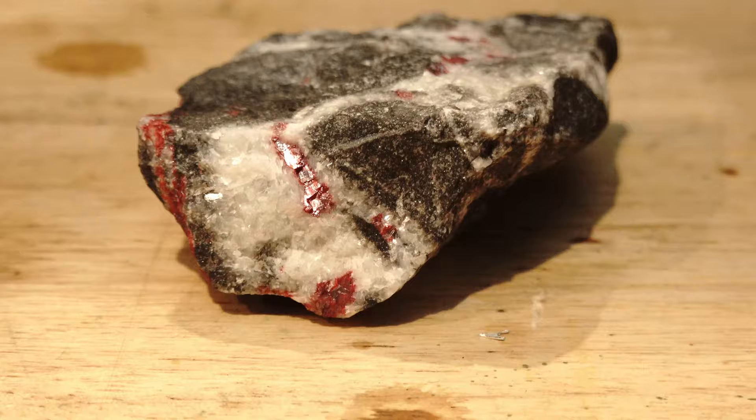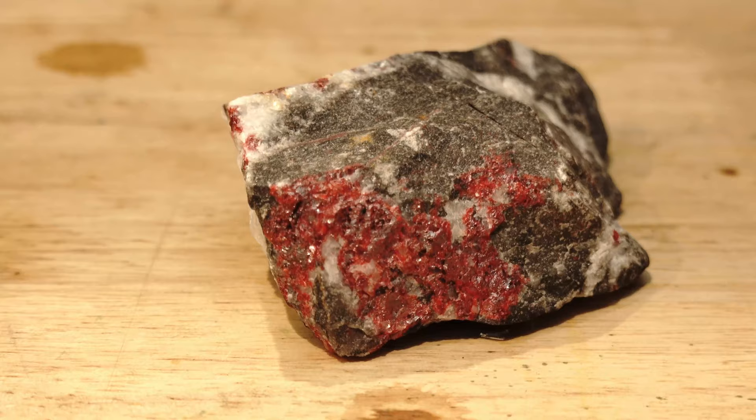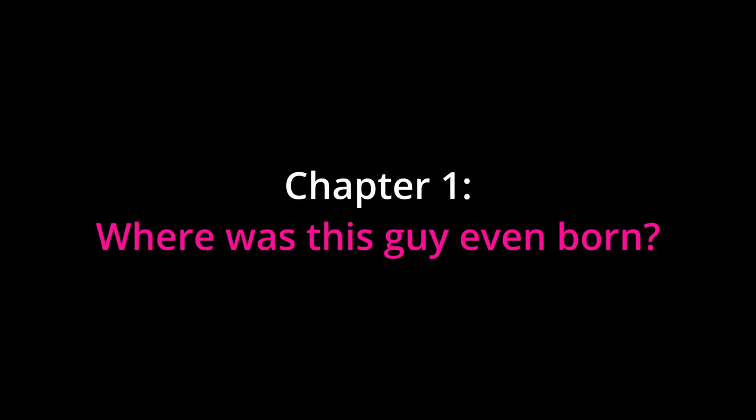This is Cinnabar, a reddish mineral which primarily consists of the infamous mercury metal in its salt form, mercury sulfide. All those red crystals and patches you see are the mercury sulfide, and in this video we'll be cooking it into mercury metal.